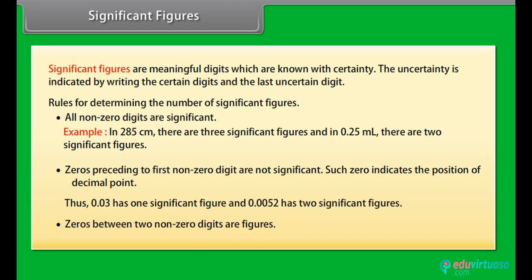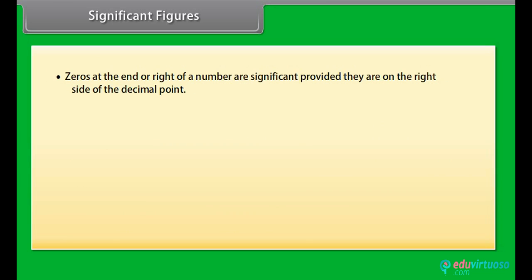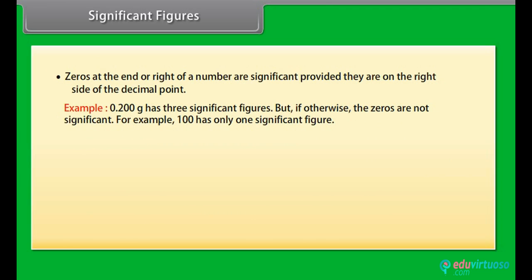Zeros between two non-zero digits are significant. Zeros at the end or right of a number are significant provided they are on the right side of the decimal point. Example: 0.200 gram has three significant figures.